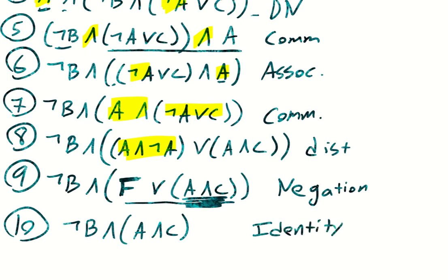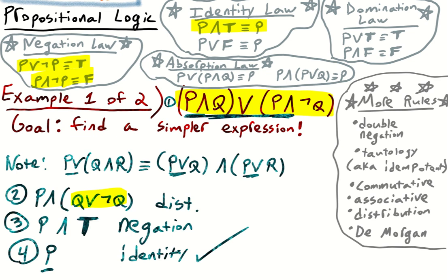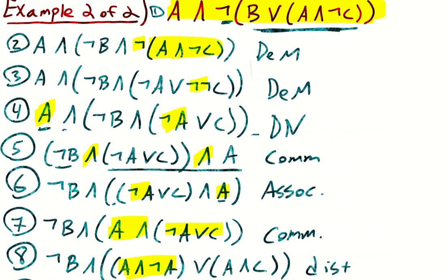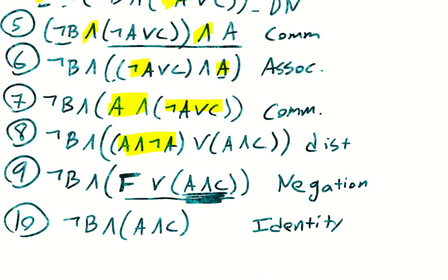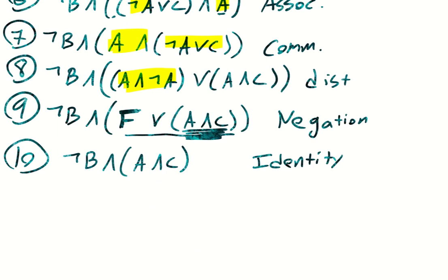And that's pretty much all we can do. Let's look at the identity law really quick to make sure — yes. By the associative law, we could remove those parentheses since there's no ambiguity, so we could say for line eleven: not b and a and c. So that simplifies the expression.